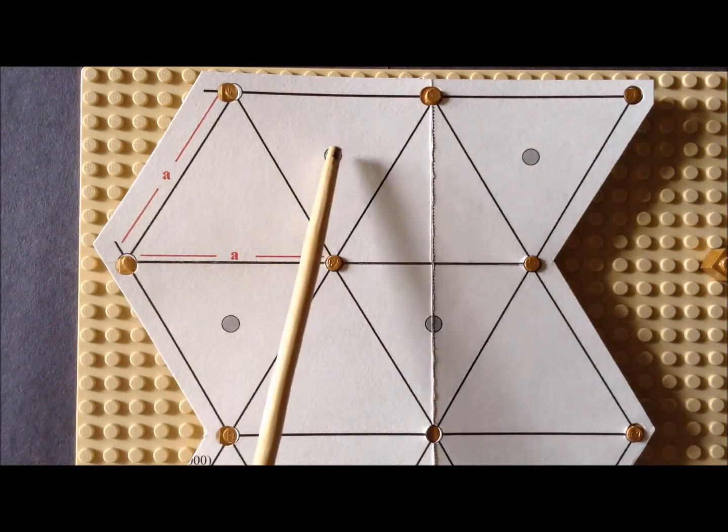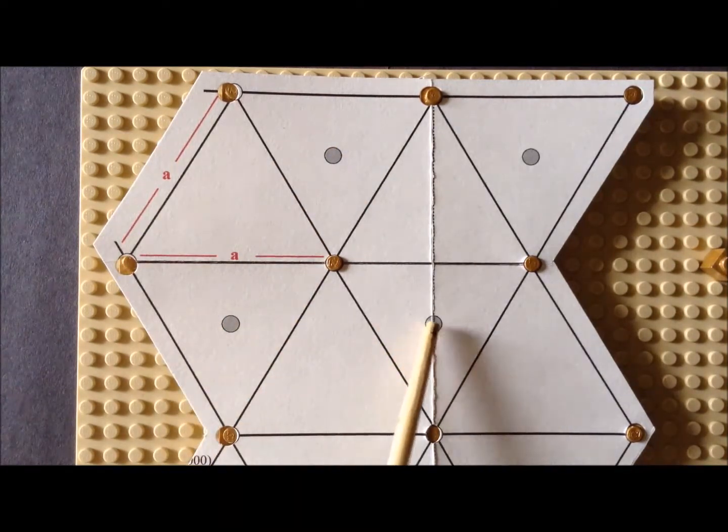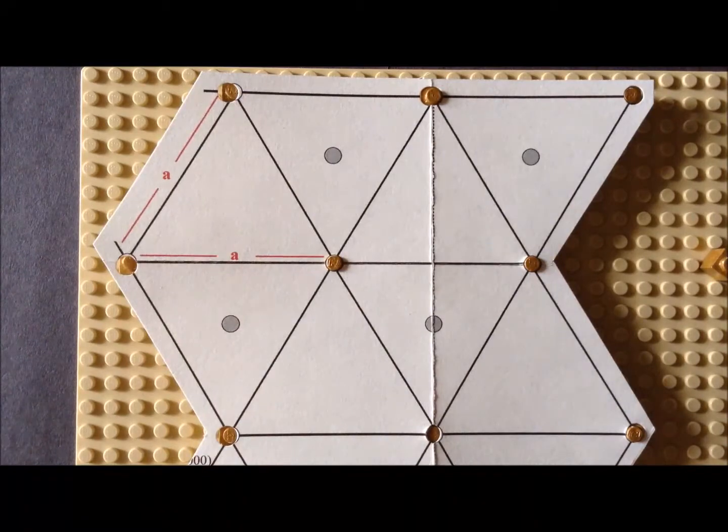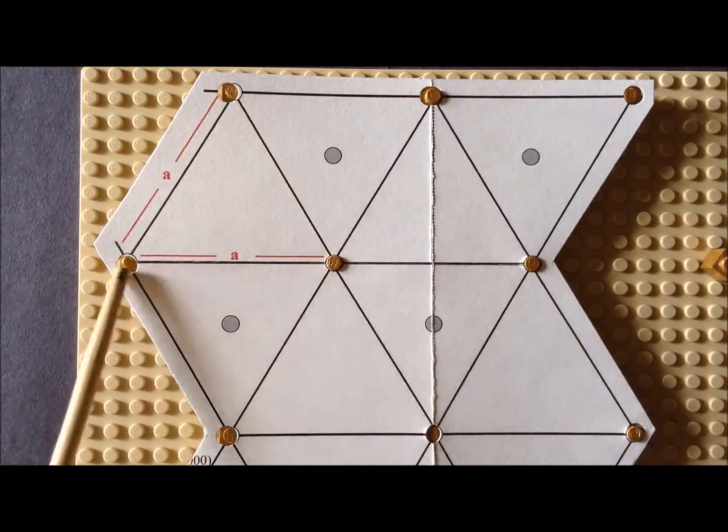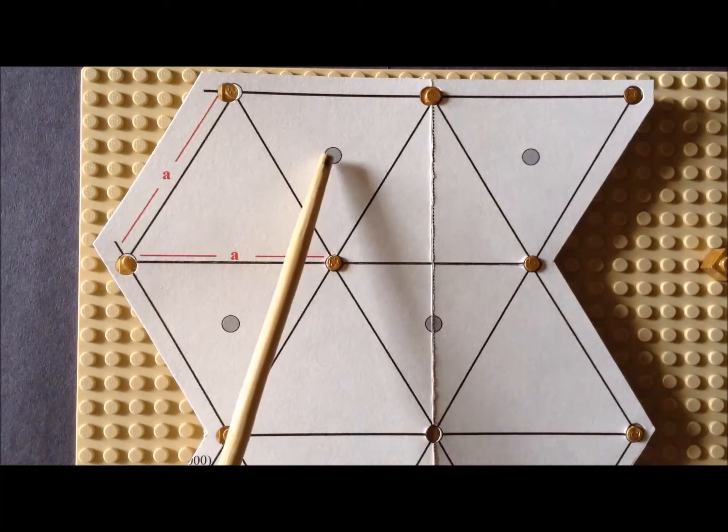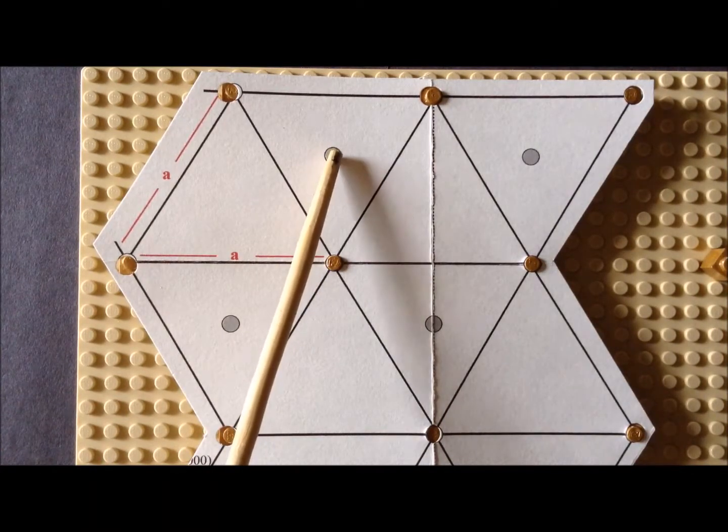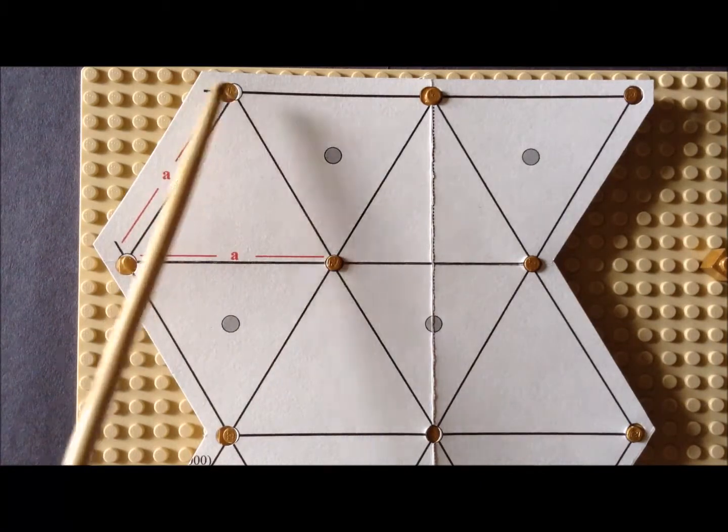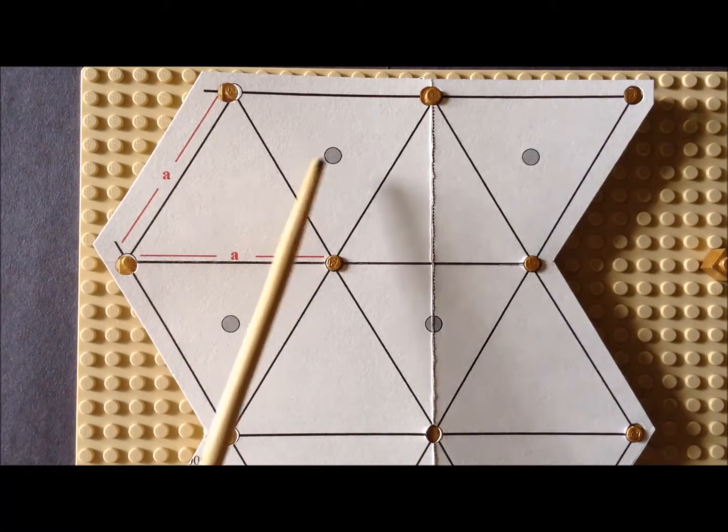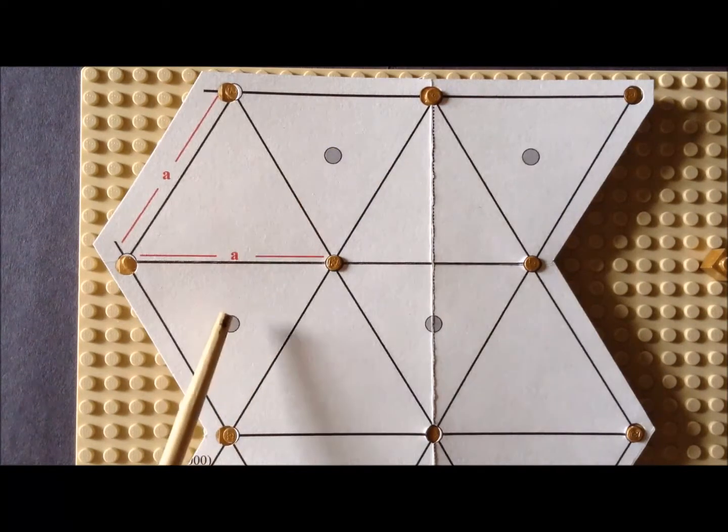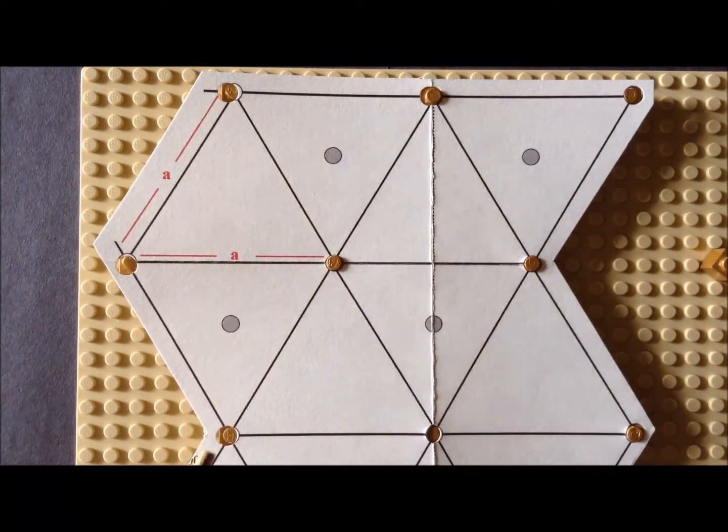But we notice, drawn on our figure here, that we have these gray dots, and these represent other atoms of exactly the same type as we have at the surface, but these are below the surface by a distance c over 2. So if we consider the gold-colored atoms here to be the A layer,